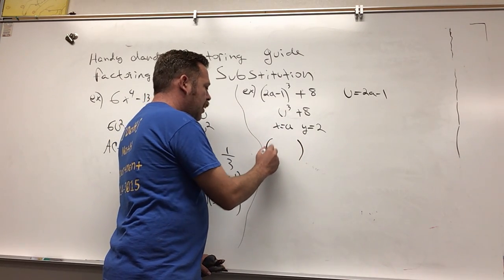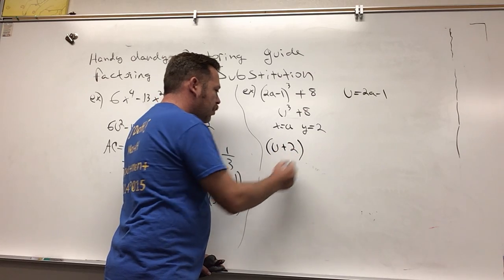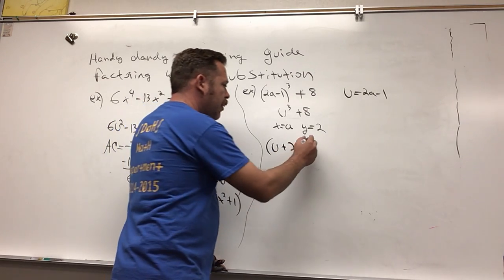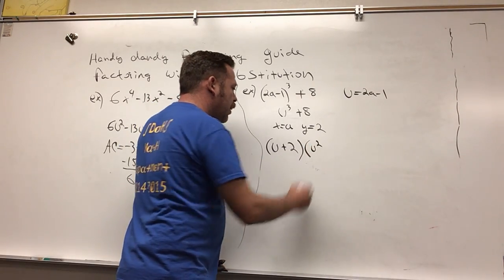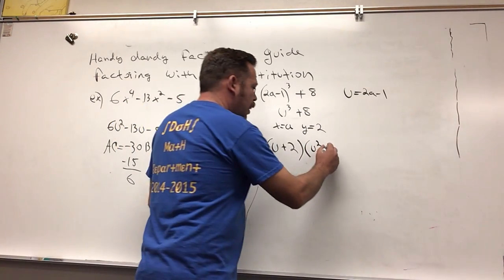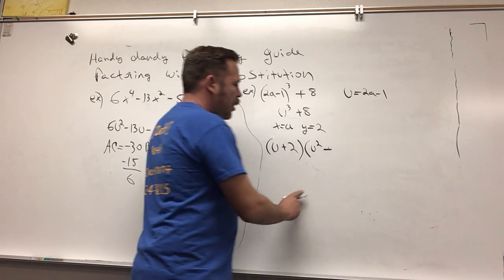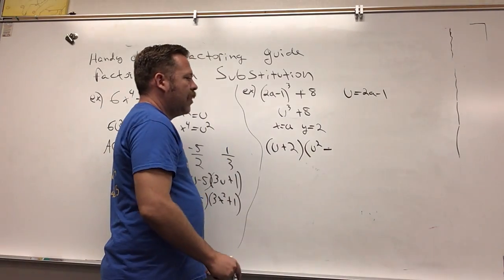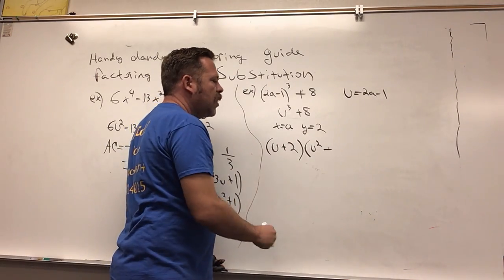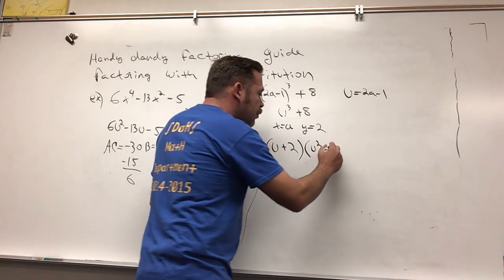If we do that, it would be u + 2, and then in parentheses I would have u² minus—for the sum of cubes it's plus here and minus there—and I'm going to multiply these two together, so u times 2, which is 2u, and then plus 4.